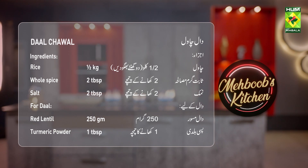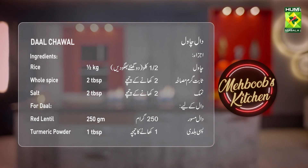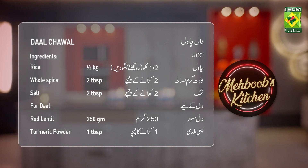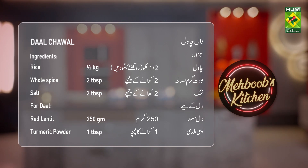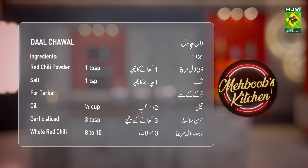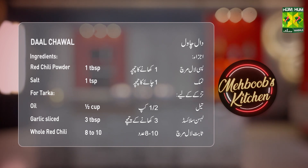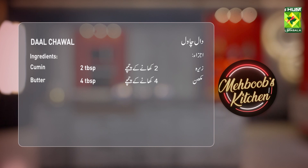Rice soaked for 2 hours, half a kilogram. Red lentil 250 grams, turmeric powder 1 tablespoon, red chili powder 1 tablespoon, salt 1 teaspoon. For tarka: oil half cup, garlic sliced 3 tablespoon, whole red chili 8 to 10, cumin 2 tablespoon, butter 4 tablespoon.